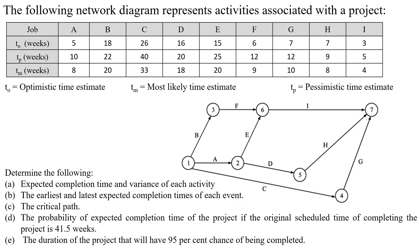In this lecture, we will discuss the example problem on PERT method. The following network diagram represents the activities associated with a project. Given the network diagram and different activities along with various estimated times — T0 (optimistic time), Tp (pessimistic time), and Tm (most likely time) — we have to determine the expected completion time and variance of each activity, and the earliest and latest expected time of each event, and the critical path. We also determine the probability of expected completion time of the project if the original scheduled time of completing the project is 41.5 weeks.